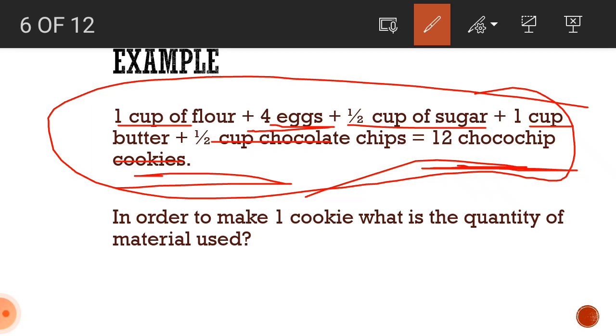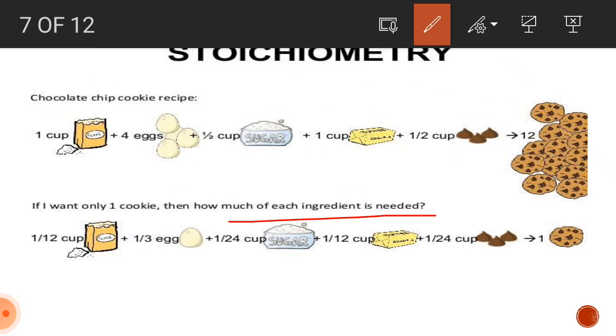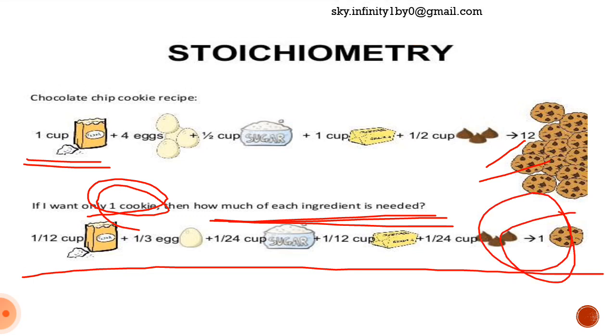So, how much of these materials will be needed just to make one chocolate chip cookie is the question and the answer to this question is stoichiometry. Based on stoichiometry, we can find how much of each ingredient is needed in order to make just one chocolate chip cookie. By dividing the individual quantities by 12, we can find the exact quantity required to just make one chocolate chip cookie. This is just an example to describe stoichiometry.